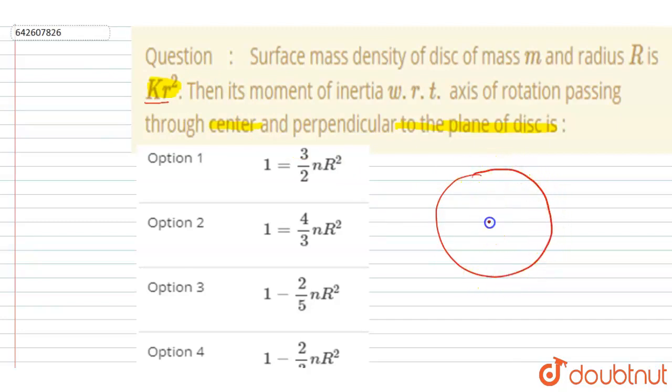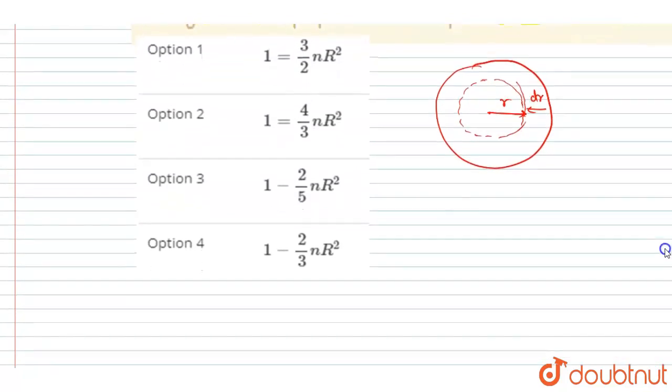So at a distance of r, if I take a ring of thickness dr, let's suppose this is the ring and the thickness of this ring is dr. So the area of this ring can be calculated by length into width, so I will write it: area is 2πr into dr for this ring.